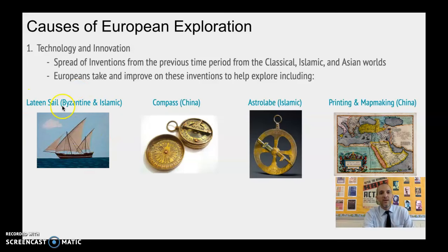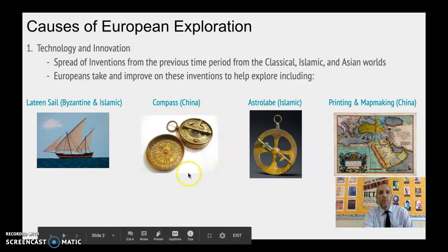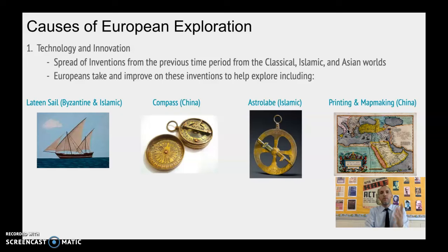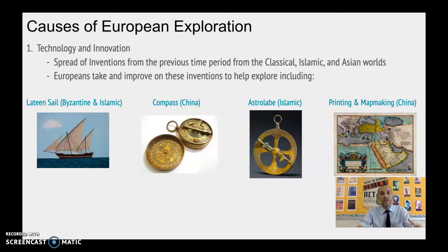These are some of the inventions: we have the Latin sail, which is Byzantine-Islamic; the compass; the astrolabe; the printing press; and mapmaking. Without these inventions, the Europeans really aren't able to explore in this time period. Because they spread in the previous time period — the contextualization — the Europeans are going to take these inventions, make them their own, and perfect them, whether to go across the Atlantic or circumnavigate the world and go around Africa to reach India and China. That's their goal: to get as close to India and China as possible and cut out all the middlemen along the way.